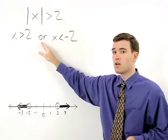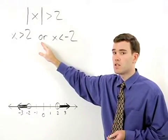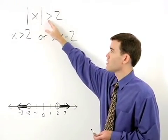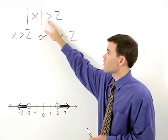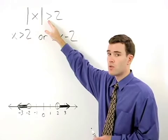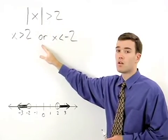The word that goes between our two inequalities is based on the direction of the inequality sign in the original problem. Since we have a greater than sign in the original problem, we use the word OR.